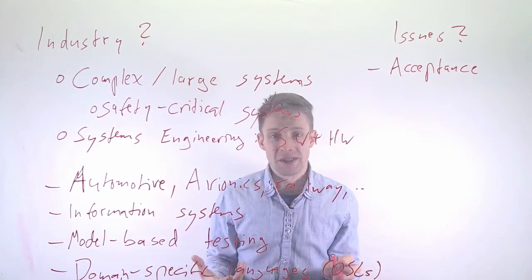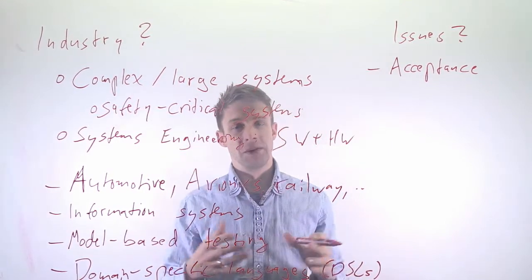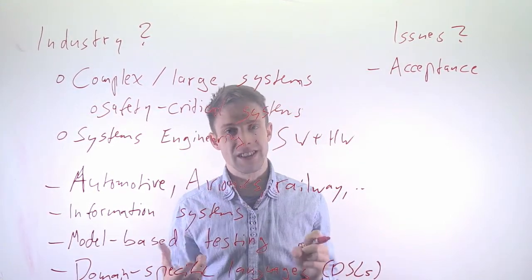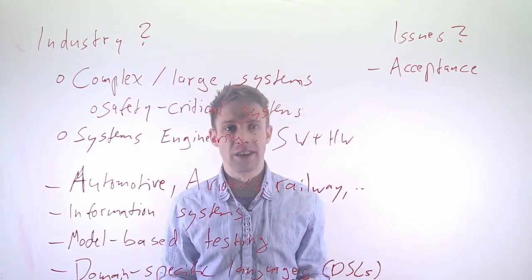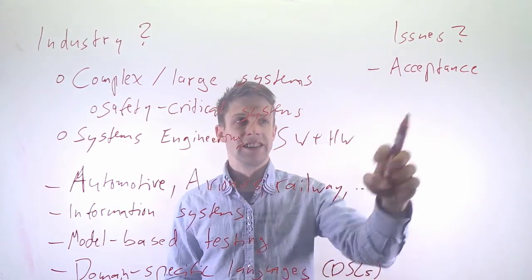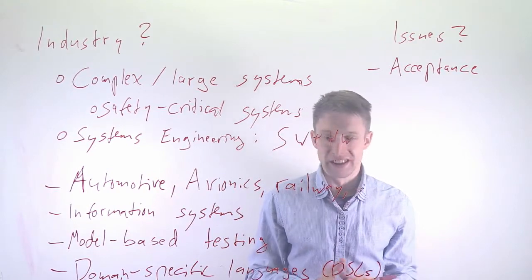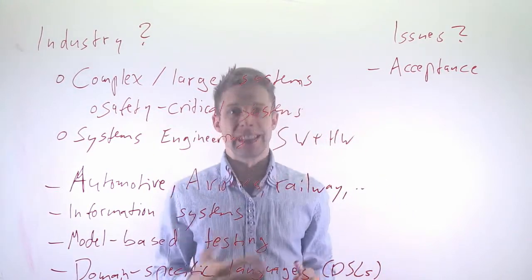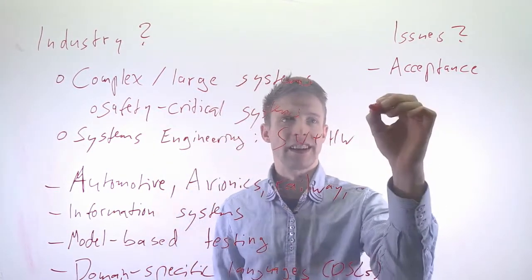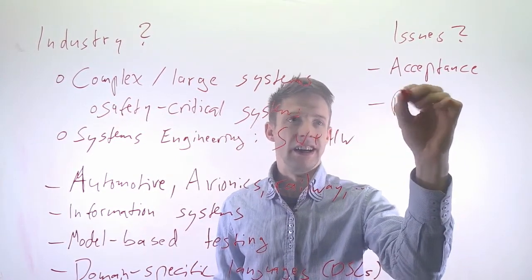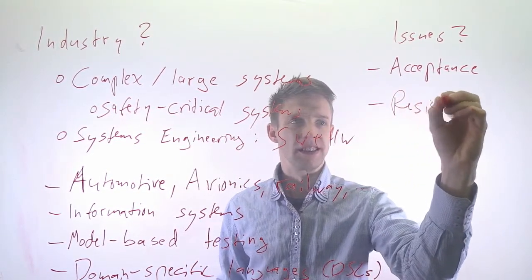So we as software engineers will very often take pride in our programming and it's some kind of skill, some kind of craft that we're good at and we like it. And telling us to model instead challenges a lot of people. So there is a certain acceptance issue among software engineers and that can generally lead to organizational resistance.